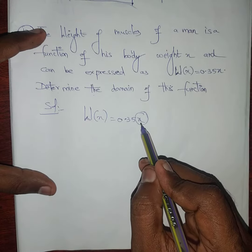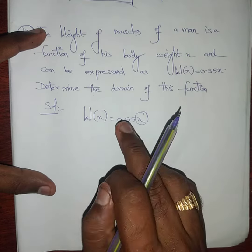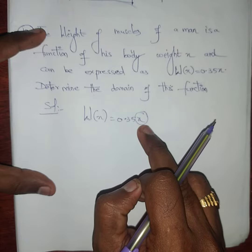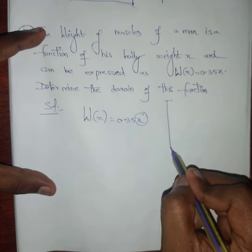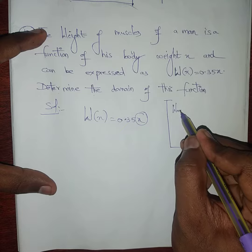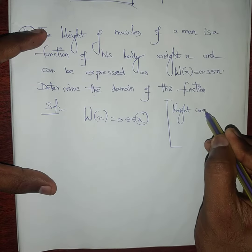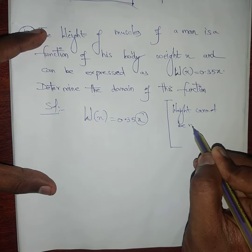Listen carefully. If I am going to put minus 1, 0.35 times minus 1 is minus 0.35. Weight cannot be negative. This is the main thing. Weight cannot be negative.